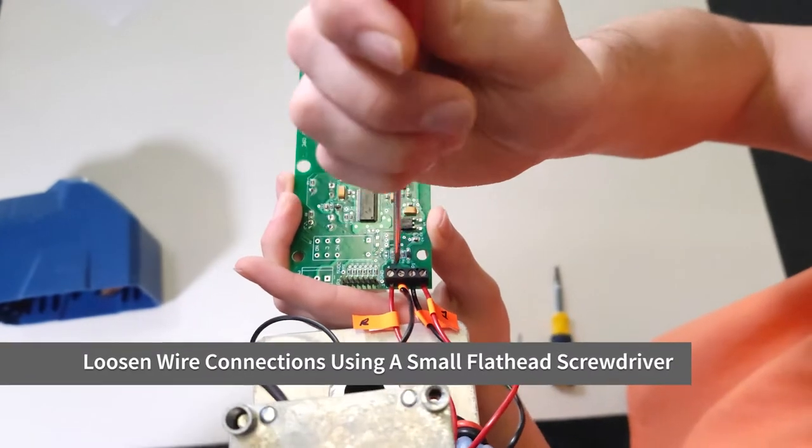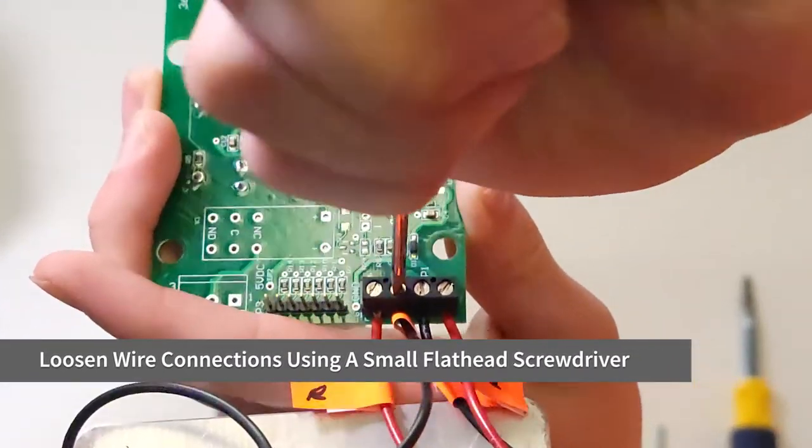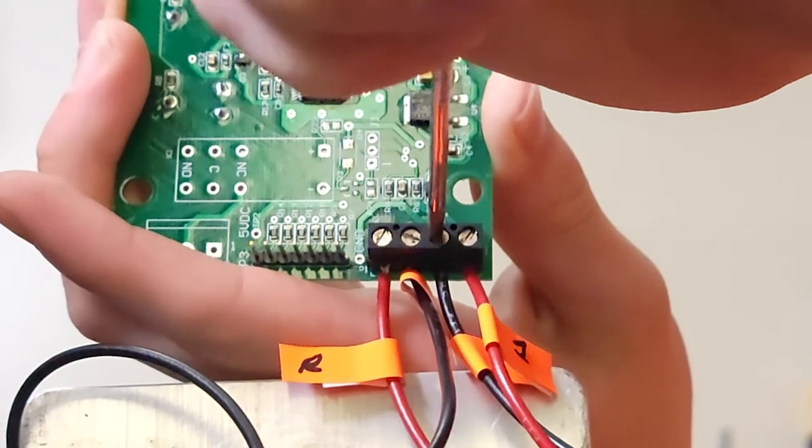While holding the circuit board, loosen the screws holding the wires in place using a mini flat head screwdriver.